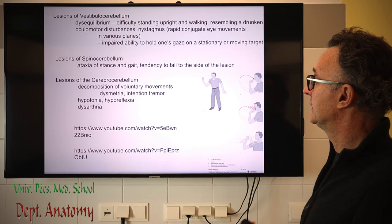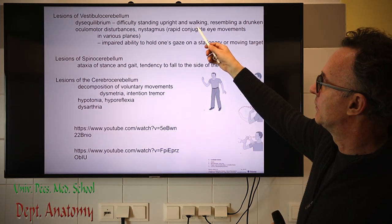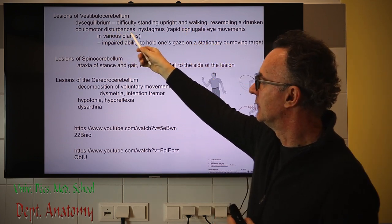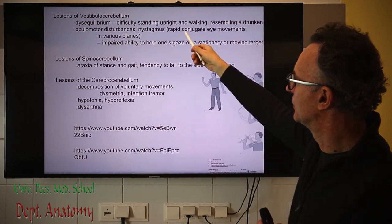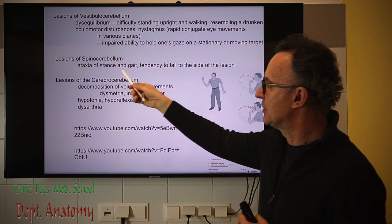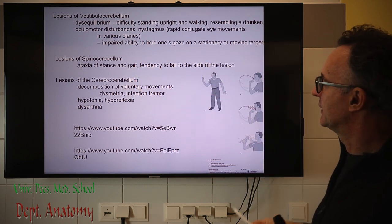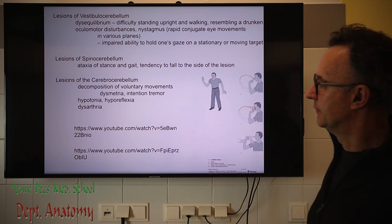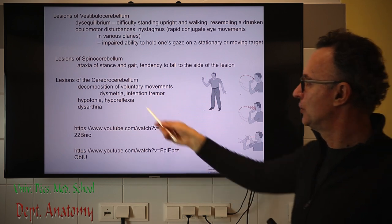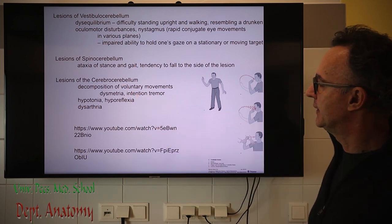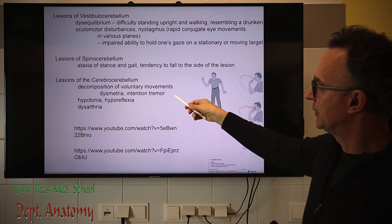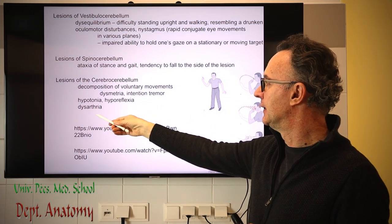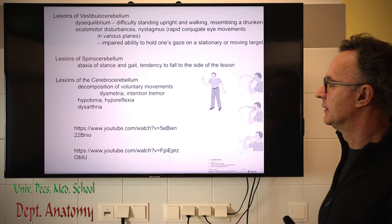Summary of lesions and symptoms: the vestibulocerebellum is important for equilibrium and eye movements — lesion causes loss of balance and oculomotor disturbances including nystagmus. The spinocerebellum is important for muscle tone and antagonistic muscle regulation — lesion leads to ataxia, staggering gait, and tendency to fall toward the side of the lesion. The pontocerebellum is important for fine-tuned movements — lesion causes intention tremor, dysmetria, hypotonia, hyperreflexia, and dysarthria.